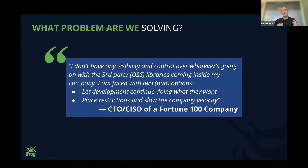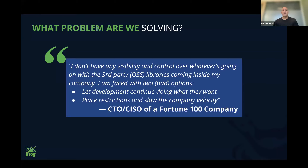What is the problem we're solving? This is nicely summed up by a quote from a CISO at a Fortune 100 company: 'I don't have any visibility or control over whatever's going on with the third-party open source libraries coming inside my company. And I am faced with two bad options: number one, let the development team continue doing what they want, or number two, place restrictions and slow the company velocity.' Companies are driving to get new software versions out as quickly as possible, which drives developers to rely heavily on open source packages, dependencies, and libraries.